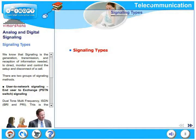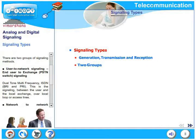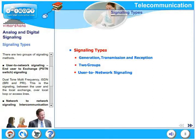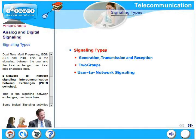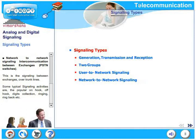There are two groups of signaling methods: user-to-network signaling and network-to-network signaling. User-to-network signaling, also called end-user to exchange signaling, includes DTMF (dual tone multi-frequency dialing) and BRI and PRI in ISDN. This is signaling between the user and the local exchange over the local loop or access lines. Network-to-network signaling, also known as inter-exchange signaling, is signaling between exchanges over trunk lines. Typical signaling activities include on hook, off hook, digit collection, ringing, and ring back.